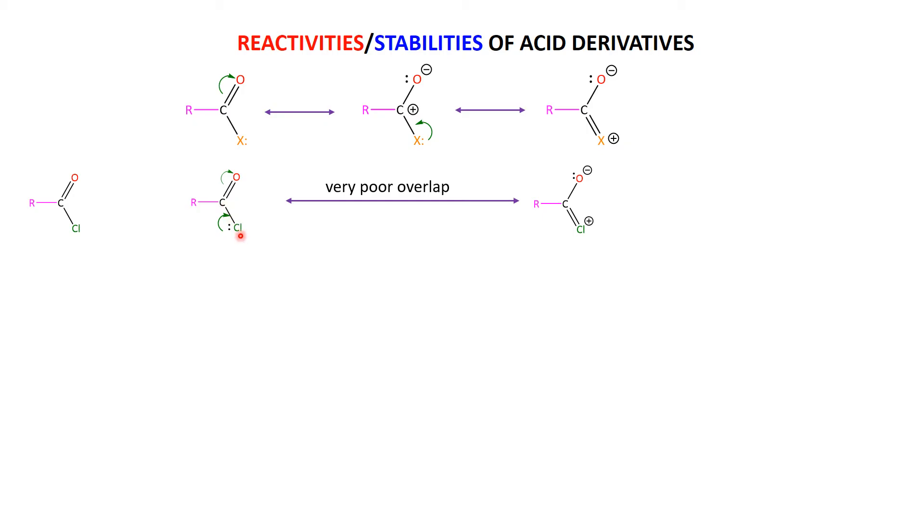Chlorine is in the third row. That's a 3p orbital. You're going to have terrible overlap between a really big 3p orbital and a much smaller 2p orbital.